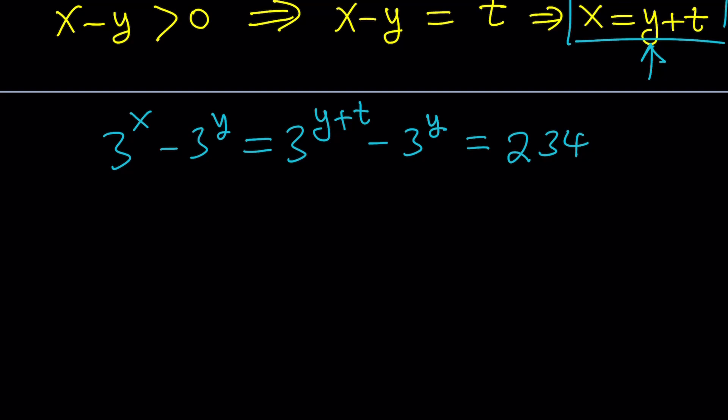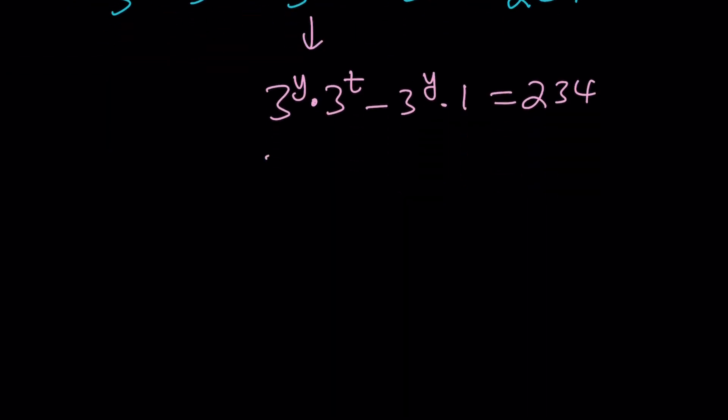At this point, it should hopefully be clear that I'm going to factor this. But first, I want to separate these into 3 to the y times 3 to the t minus 3 to the y times 1. And now, 3 to the y is a common factor. We can go ahead and pull that out. And then, inside, we're going to have 3 to the t minus 1.